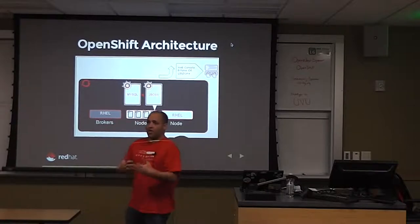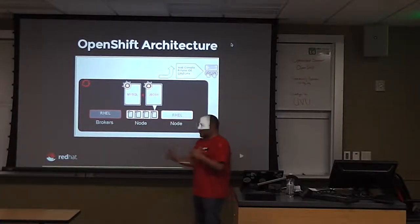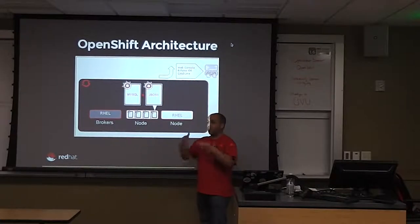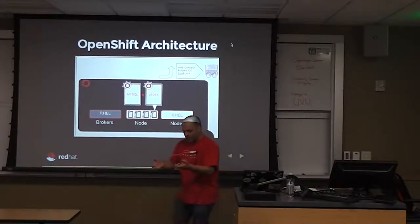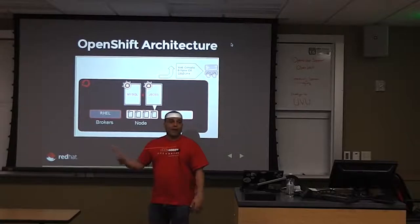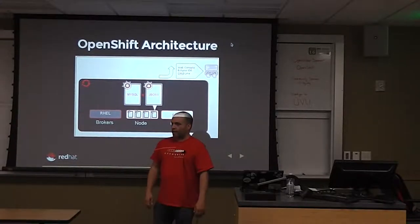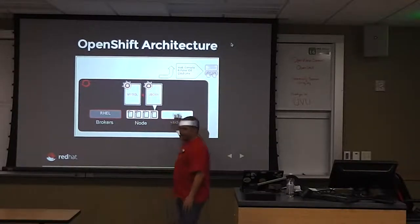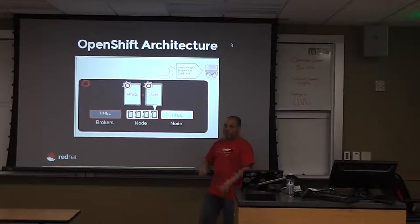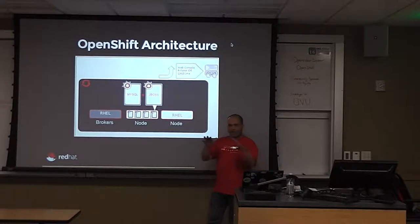I'm going to talk about OpenShift architecture, because if you don't understand this you won't understand the rest about scaling. How we do scaling is how you should think about scaling your apps whether you use Platform as a Service or not. When building for vertical scaling you'd think 'I'll increase the heap size.' Building for horizontal scaling still requires you to think about your hardware.